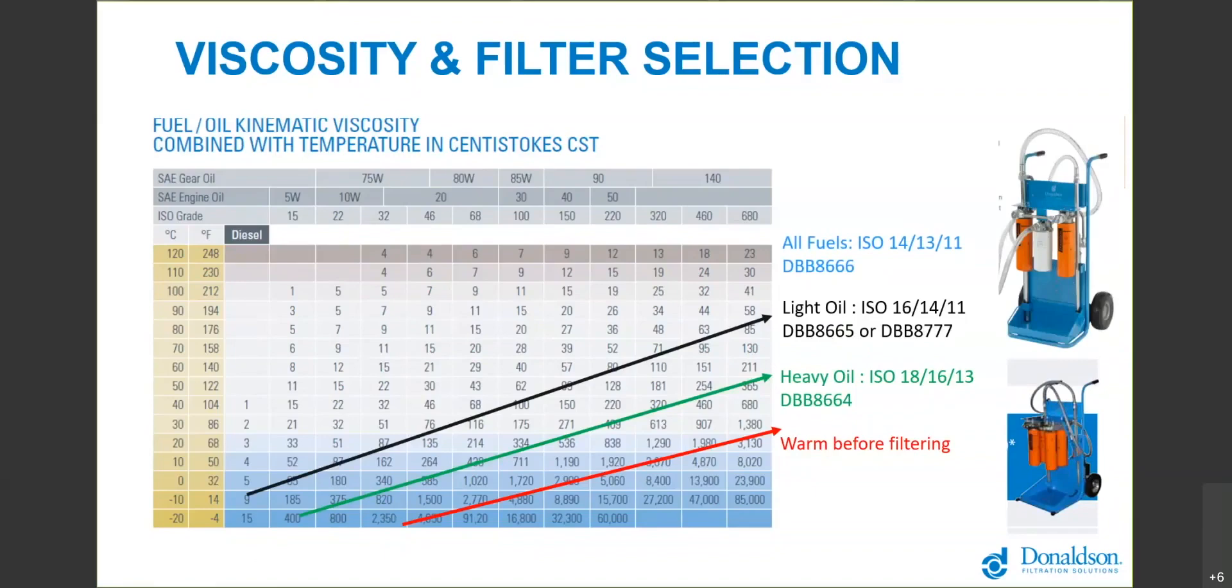That maxes out about 100 centistoke viscosity. Anything thinner than that you can use a light oil filter or fuel filter, and you can see the ISO cleanliness code that we will get downstream of that filter, the DBB 8666.